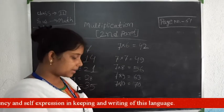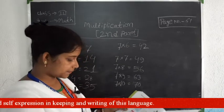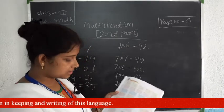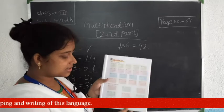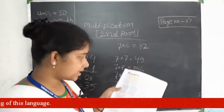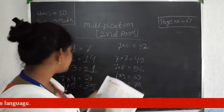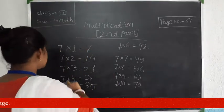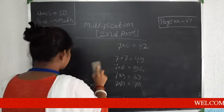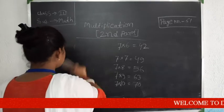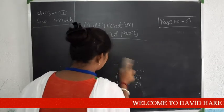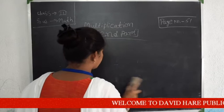Now turn the page to page number 63. Here some problems about multiplication have been given, and I am going to solve one problem.